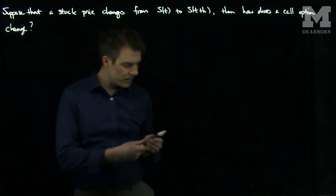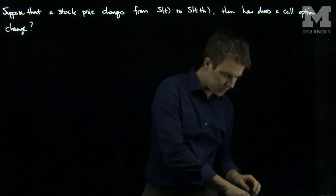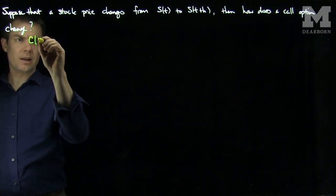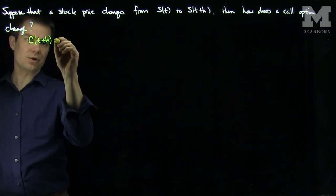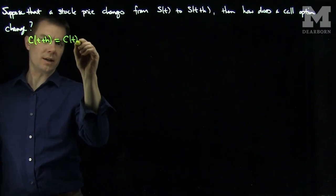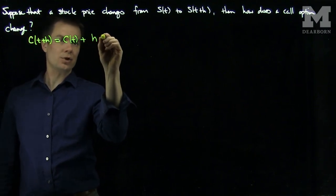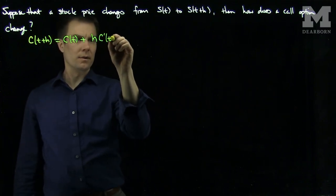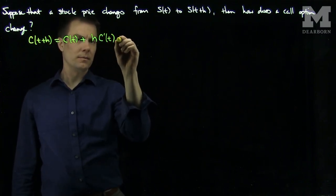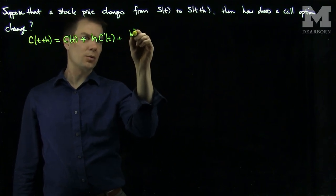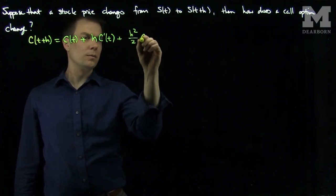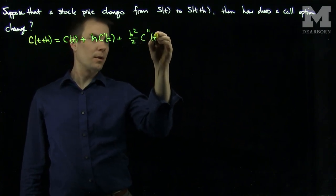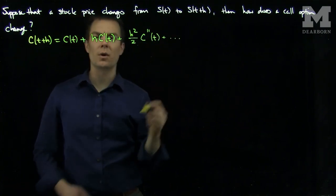To answer this question, we will use the Taylor approximation. So the Taylor approximation will tell me that C(t+h) is C(t) plus h·C'(t) plus h²/2·C''(t), and so on.